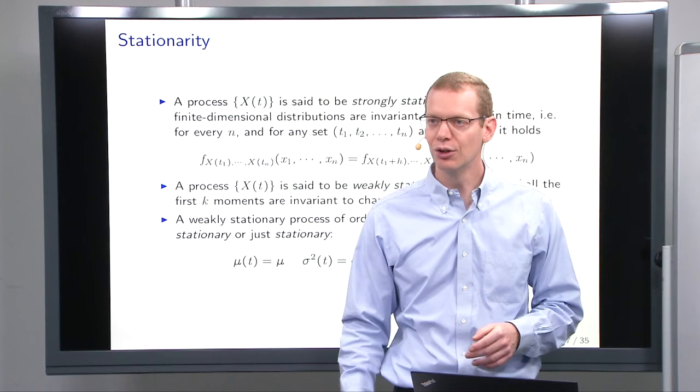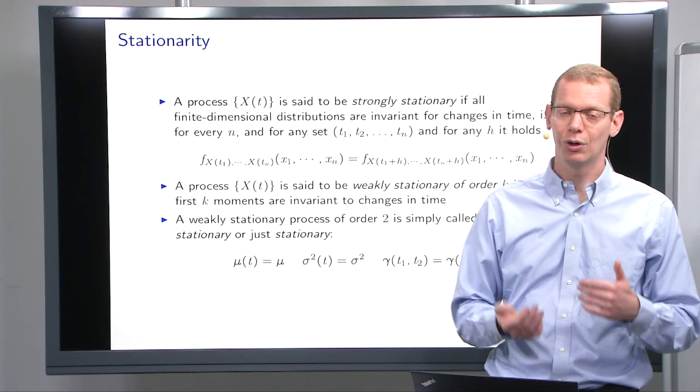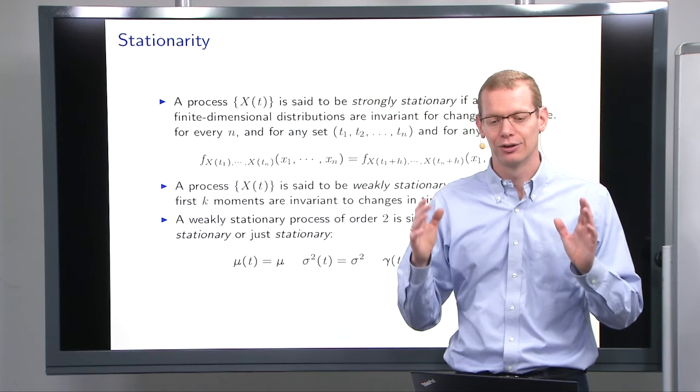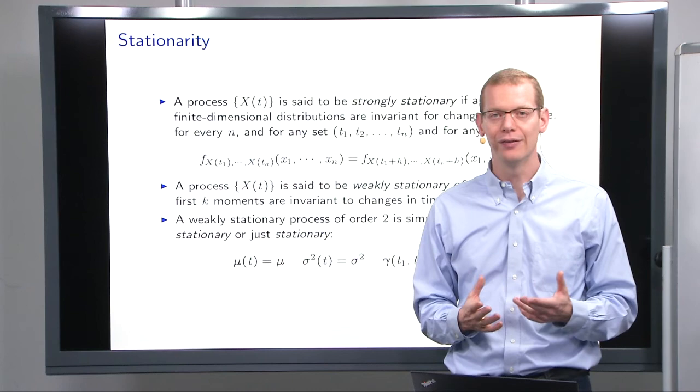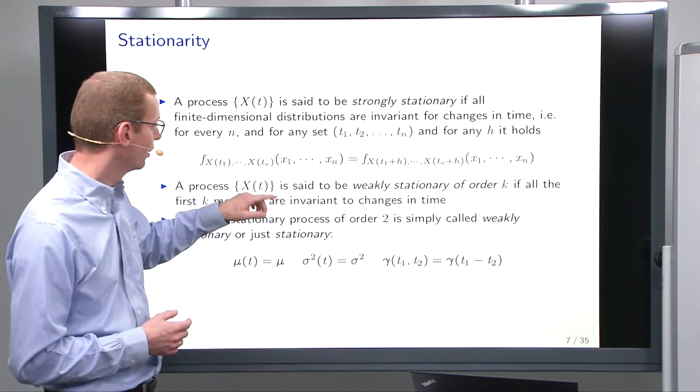Now, one thing that is important when we look at stochastic processes is whether they're stationary or not. And what does it mean for a process to be stationary? Well, there's different degrees of stationary, first of all. So the strongest part is called strongly stationary.